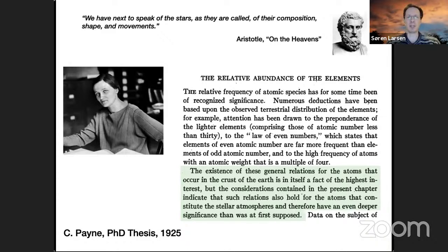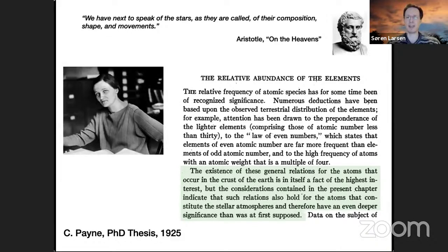The work that Cecilia Payne did, and that we continue today, rests on a lot of work done by other branches of physics. To make sense of an astronomical spectrum you need to understand atomic physics and quantum mechanics to convert measurements of line strength into chemical abundances. The results you get are going to be no better than the input physics you use when you do the analysis.